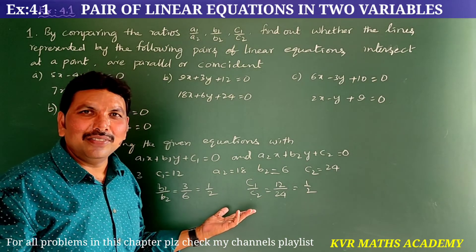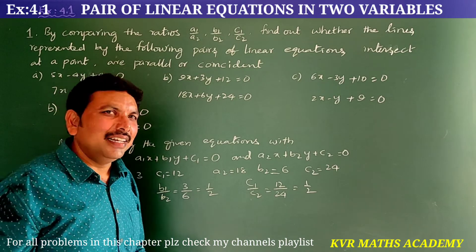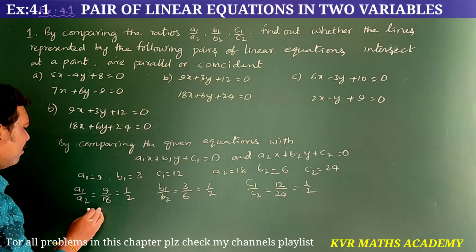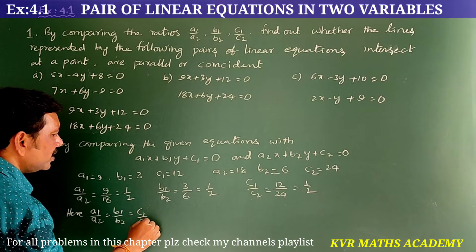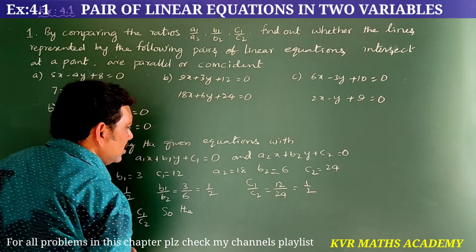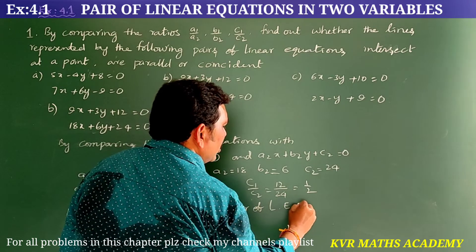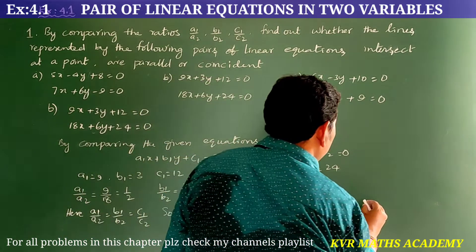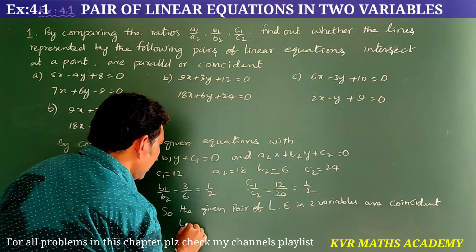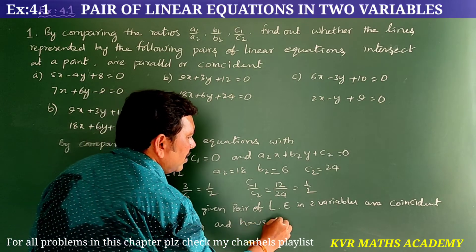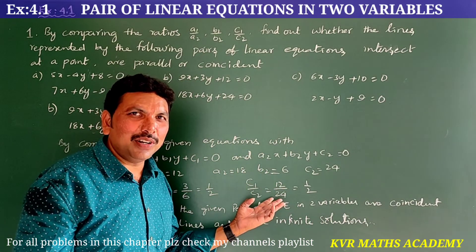Since A1 by A2 is equal to B1 by B2 is equal to C1 by C2, these are coincident lines and have infinite solutions — consistent with infinite solutions. The given pair of linear equations in two variables are coincident lines and have infinite solutions.